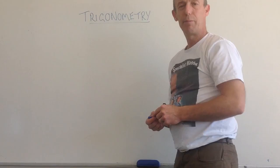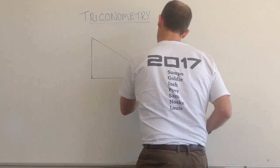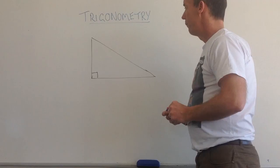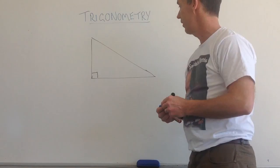So the first thing that we need to do when we're dealing with trigonometry is to be able to label our sides. So if I draw a right angle triangle, it looks like that.